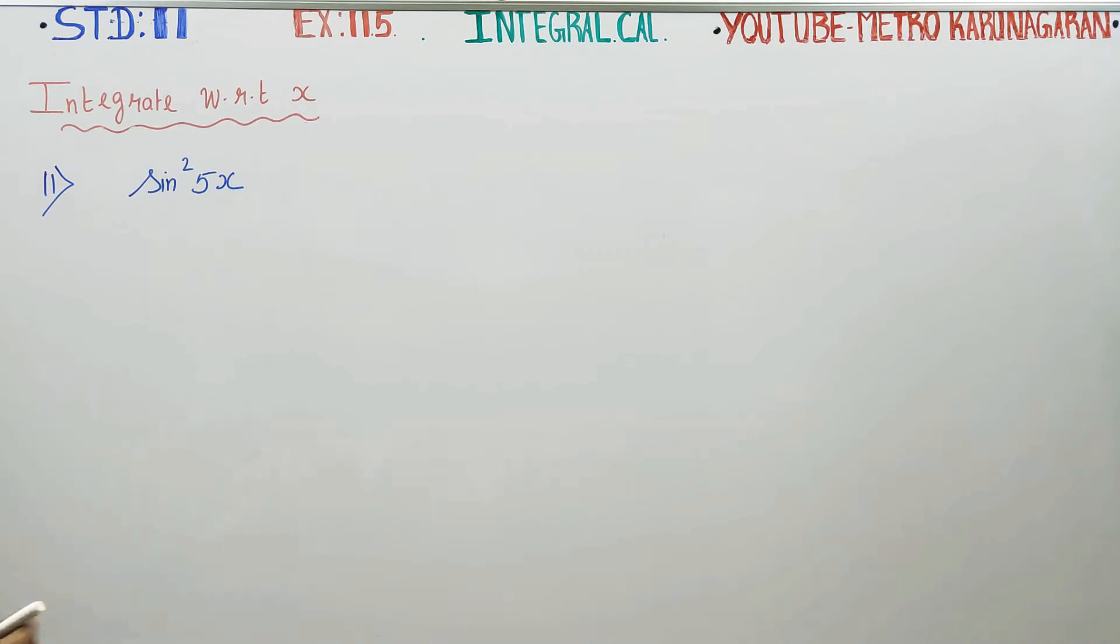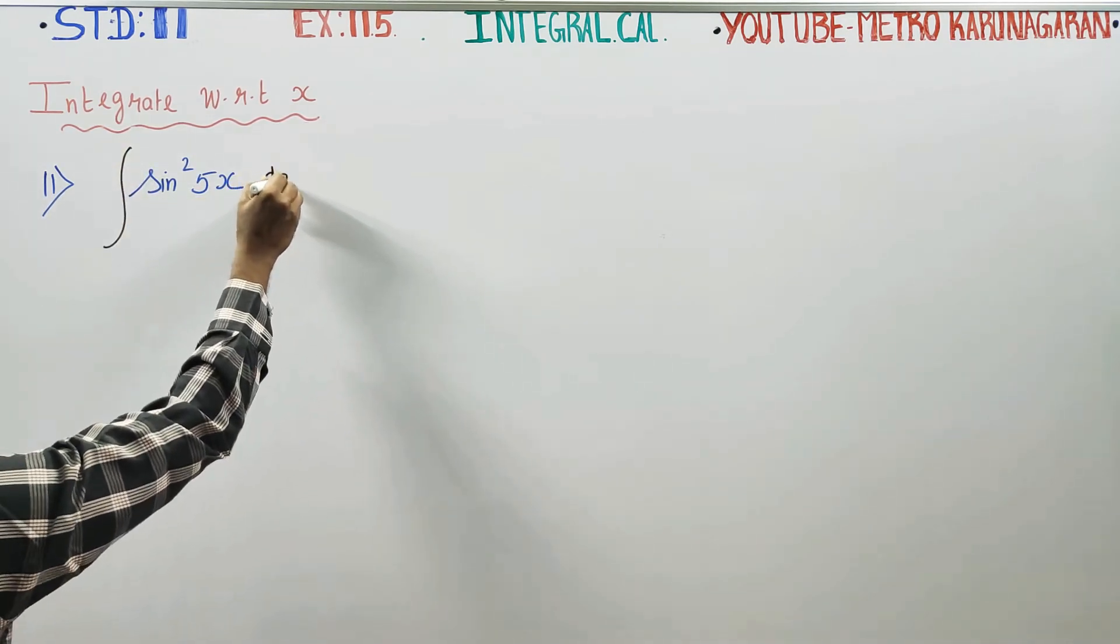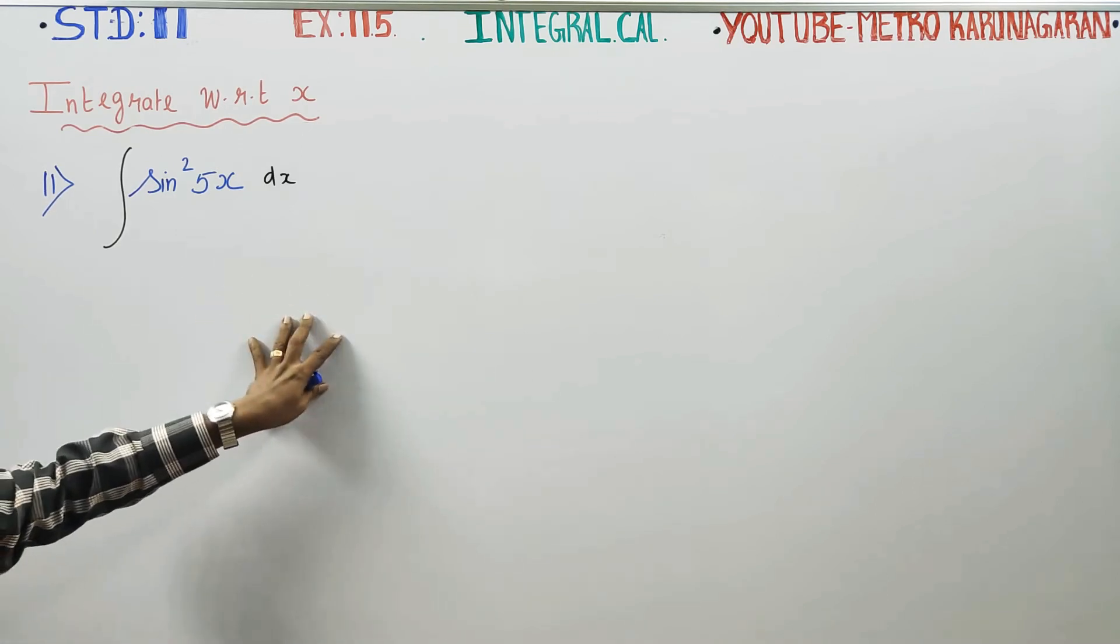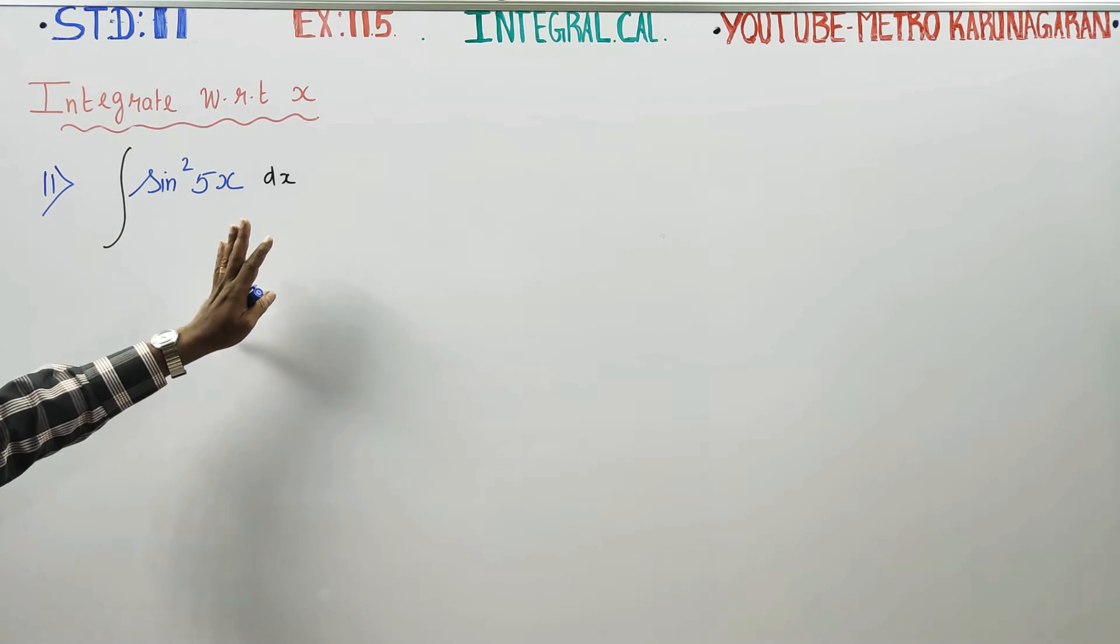You have to integrate this sum with respect to x. Before entering into integration, square law on the director integrate panna mudi adh. Sin 5x square vandha integrate panna mudi adh. So sin 5x into sin 5x, rendu vati sin integrate panna panna kudadh. Square law on the panna kudadh. Plus law on the panna kudadh.